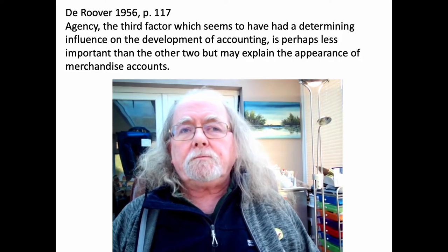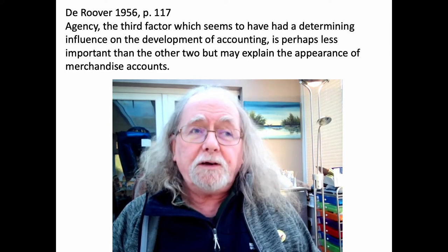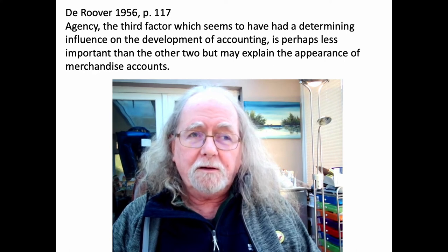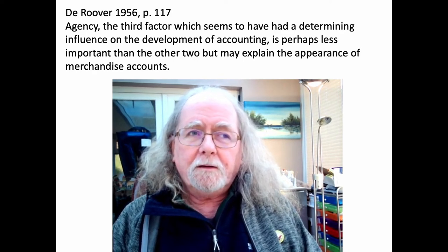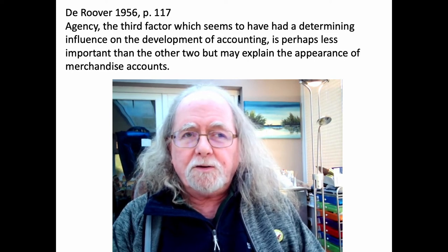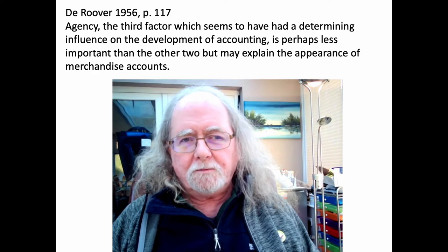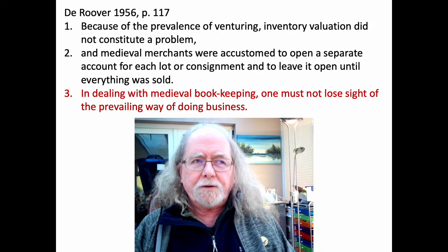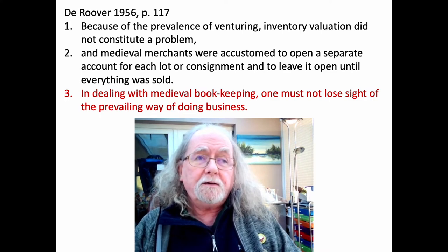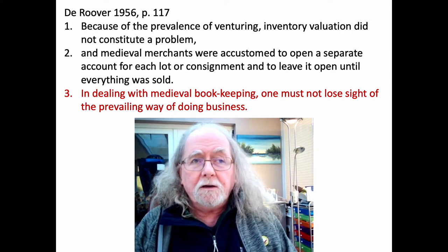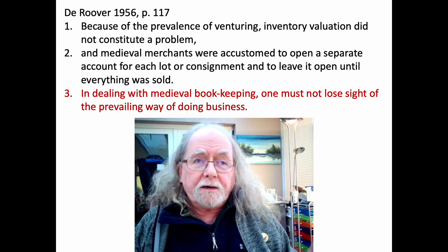De Roover talks about agency, saying it's less important than the other two factors. But the development of bookkeeping through agency is very important — no less important than partners, because partners who are not present are agents of the other partners. He then says agency might explain the appearance of merchandise accounts, which is not really a valid point. He goes on to discuss venture accounts — venturing, going on voyages, sending goods on consignment, doing something as a one-off. These were all ventures, and we have a form of bookkeeping called venture accounting.